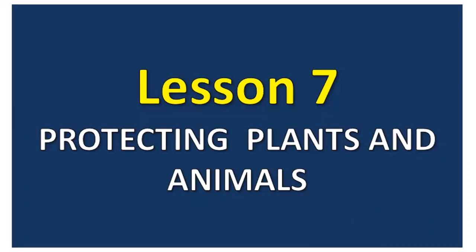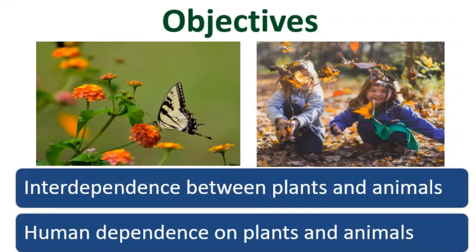Good morning. Today we will be starting with Lesson 7: Protecting Plants and Animals. In this lesson, we will be talking about interdependence between plants and animals and how human beings are dependent on both plants and animals.